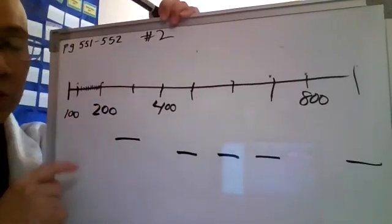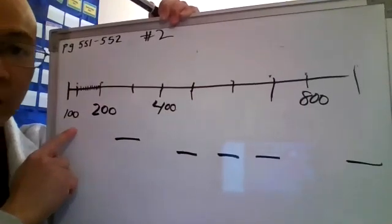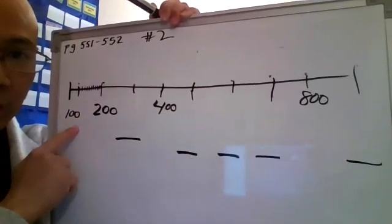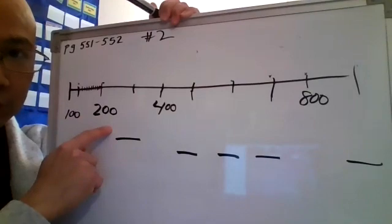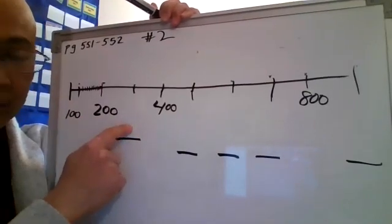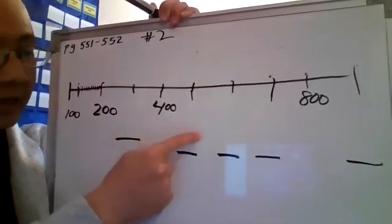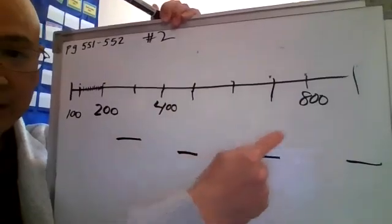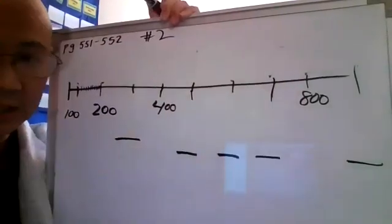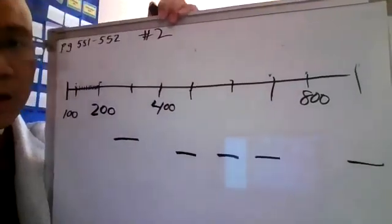Page 551 number two. Now number two begins with 100, then 200, I have a missing number, then 400, then I have three missing numbers, 800, and then another missing number. I have to figure out what the numbers are increasing by.